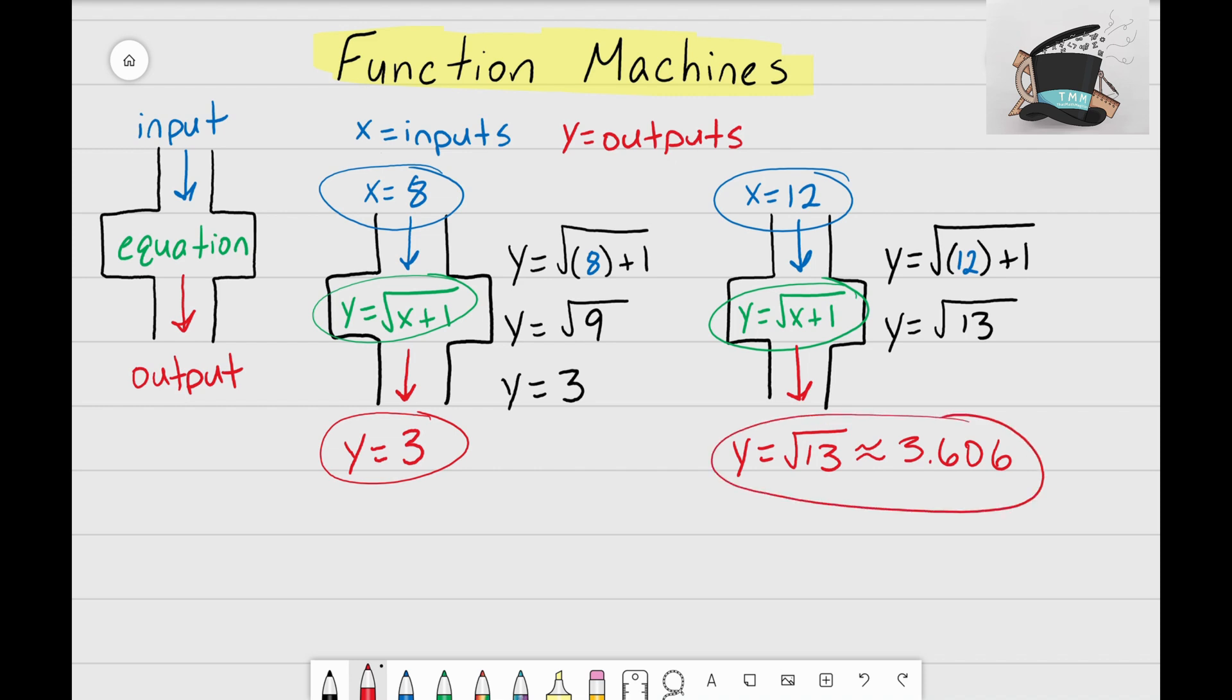Which is approximately 3.606. On the next video I'm going to work through more examples on other types of function machines. It's that mathematician and I'll see you next time.